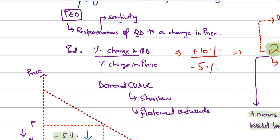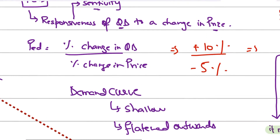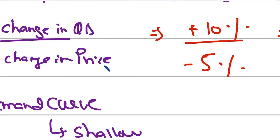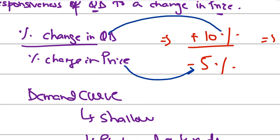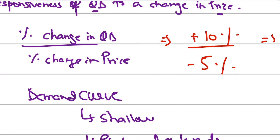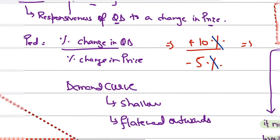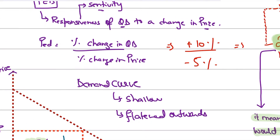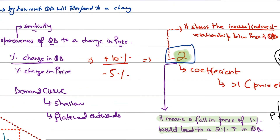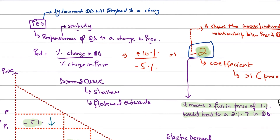PED equals percentage change in quantity demanded divided by percentage change in price. For example, Farhan reduces the price of clothes by 5% (minus 5%), and quantity demanded increases by 10% (plus 10%). Dividing 10% by 5%, the percent signs cancel, giving an answer of minus 2. That is what PED is telling us.